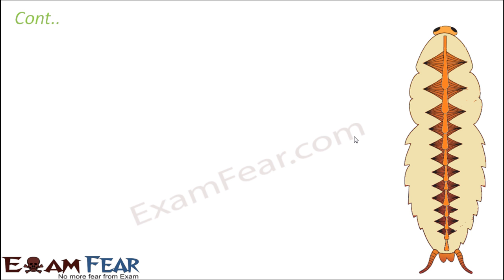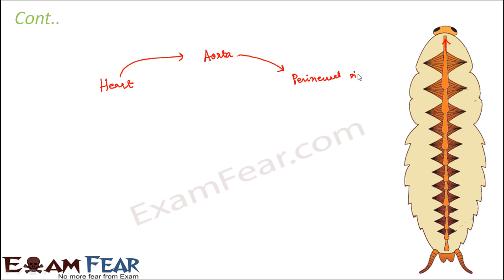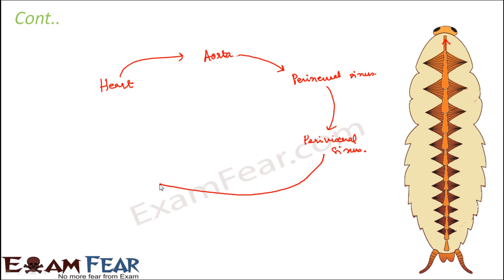Now let us look at the process of circulation — how blood flows from one region to another. The heart, being the pumping organ, pumps blood into the anterior aorta. From the aorta, blood moves into the perineural sinus — the bottom-most cavity. From the perineural sinus it moves to the perivisceral sinus, and from there to the pericardial sinus.